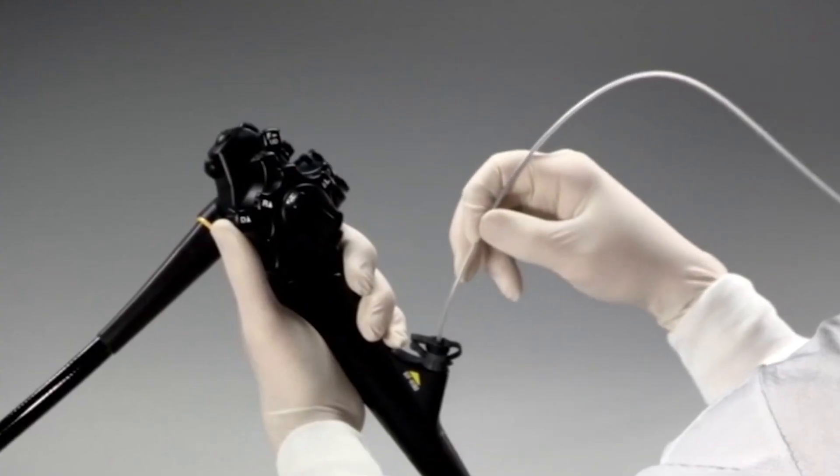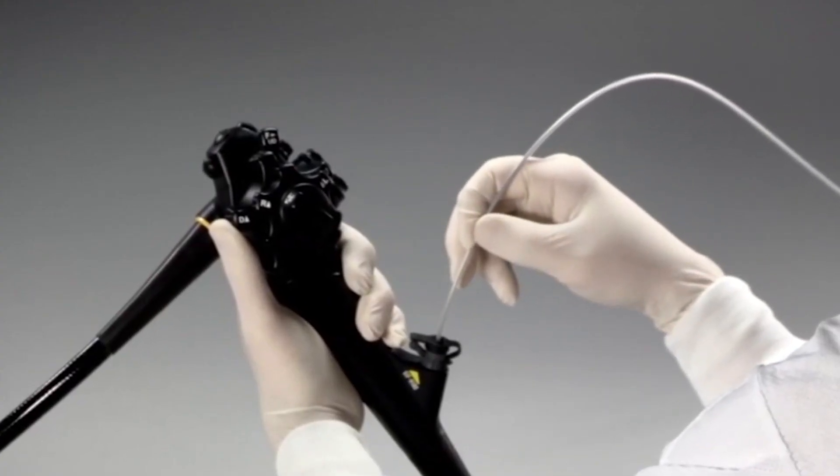After inserting the device into the endoscope confirm that the tip of the sheath is out of the scope and that there is space between the tip of the sheath and the target mucosa.